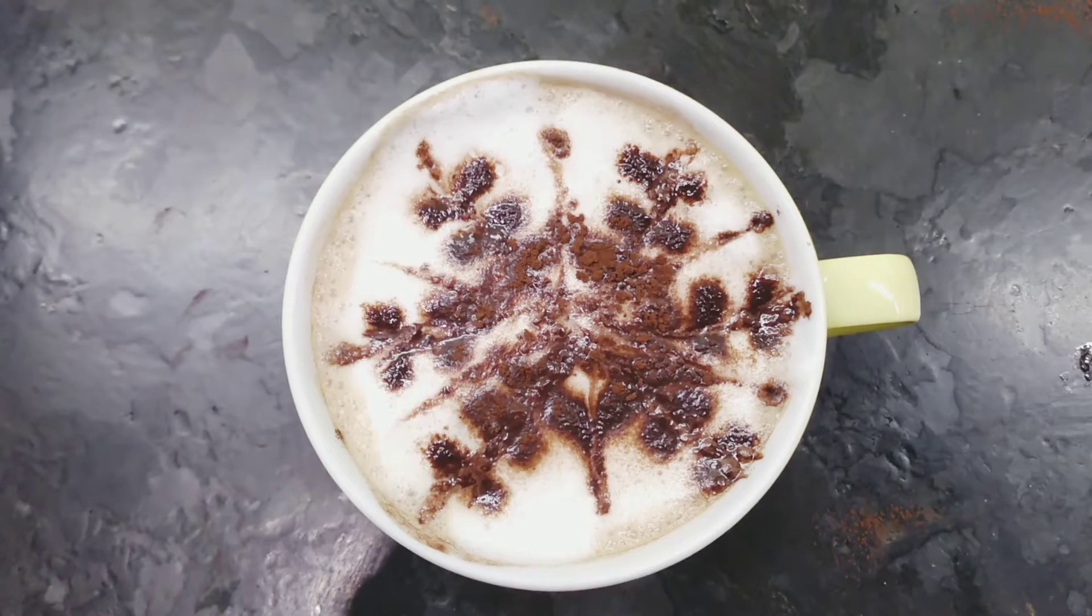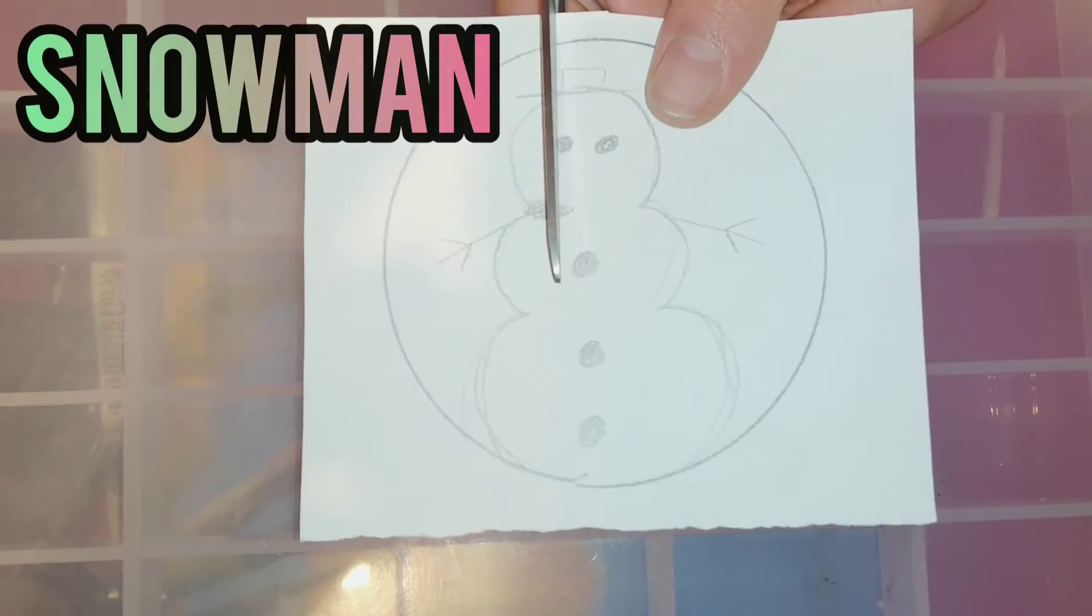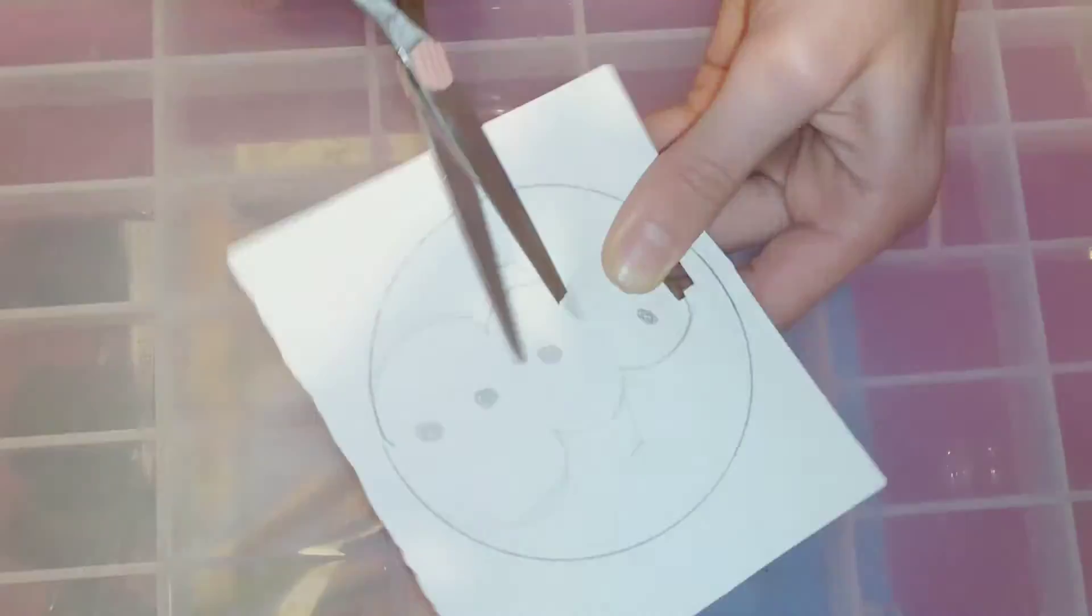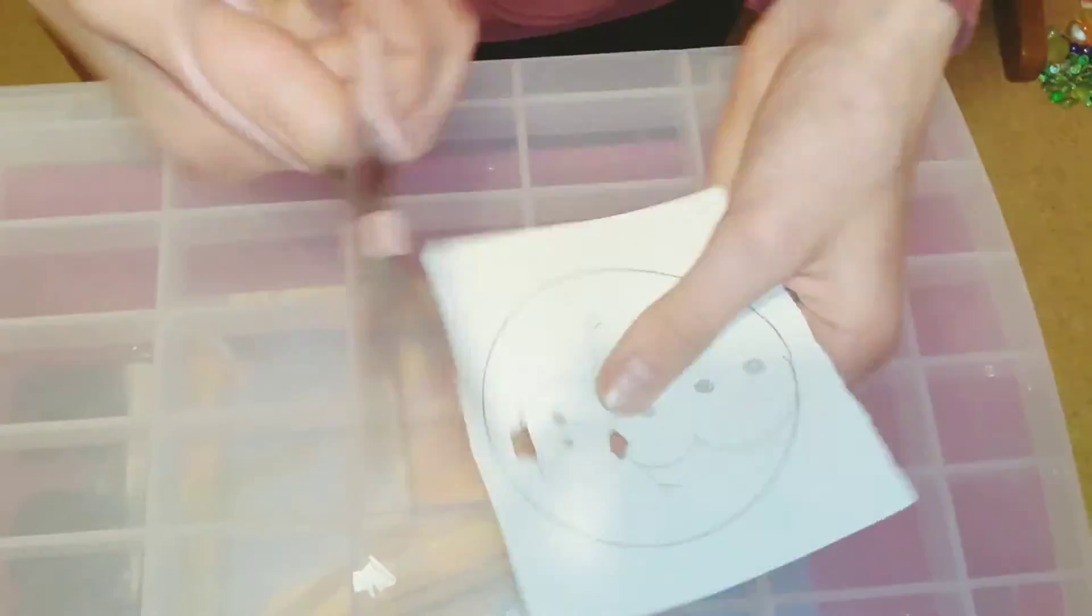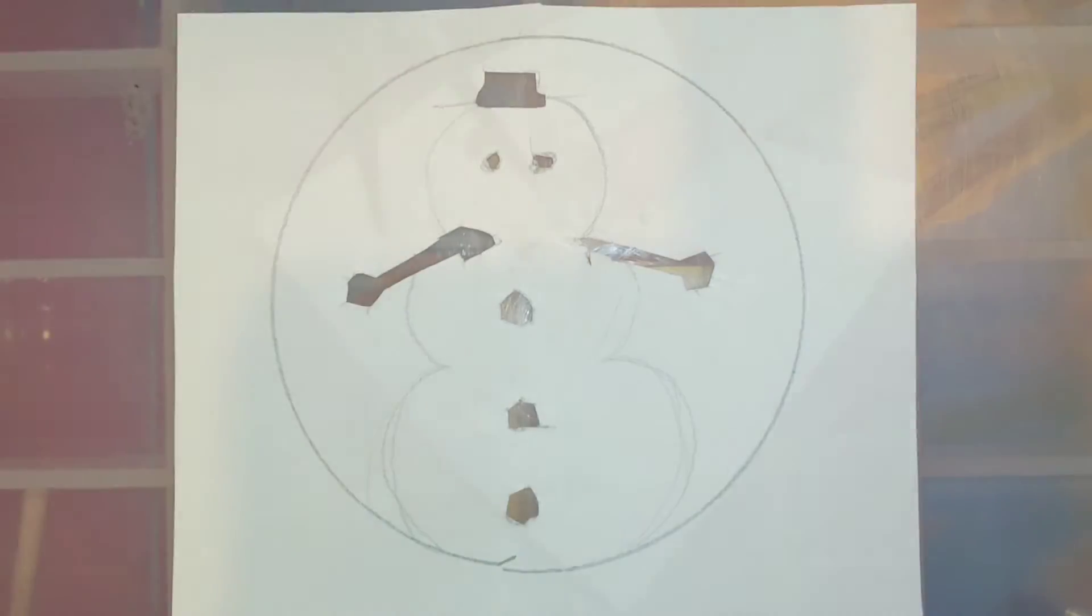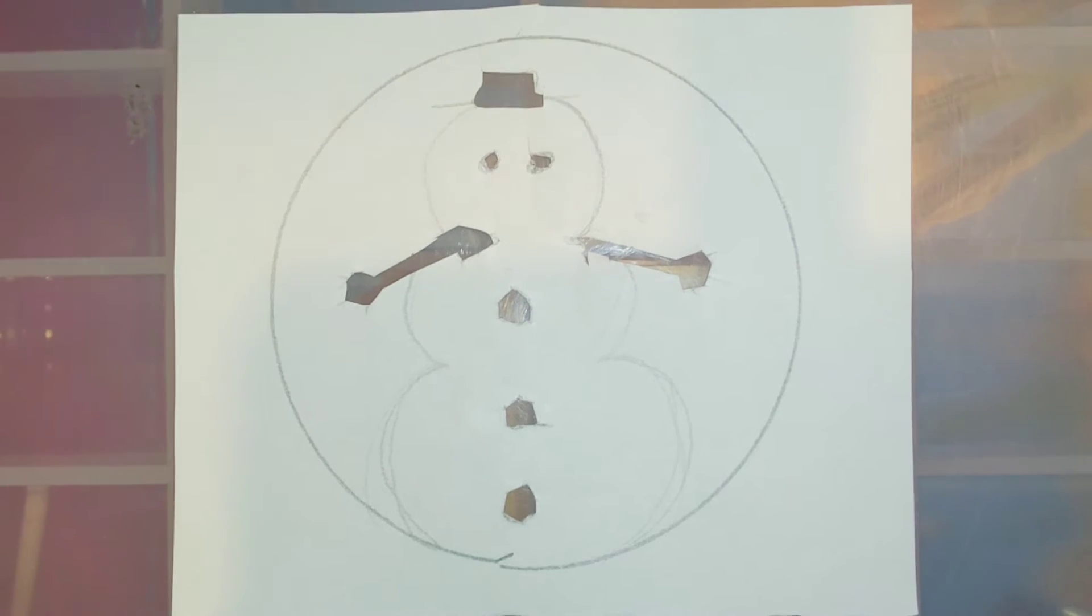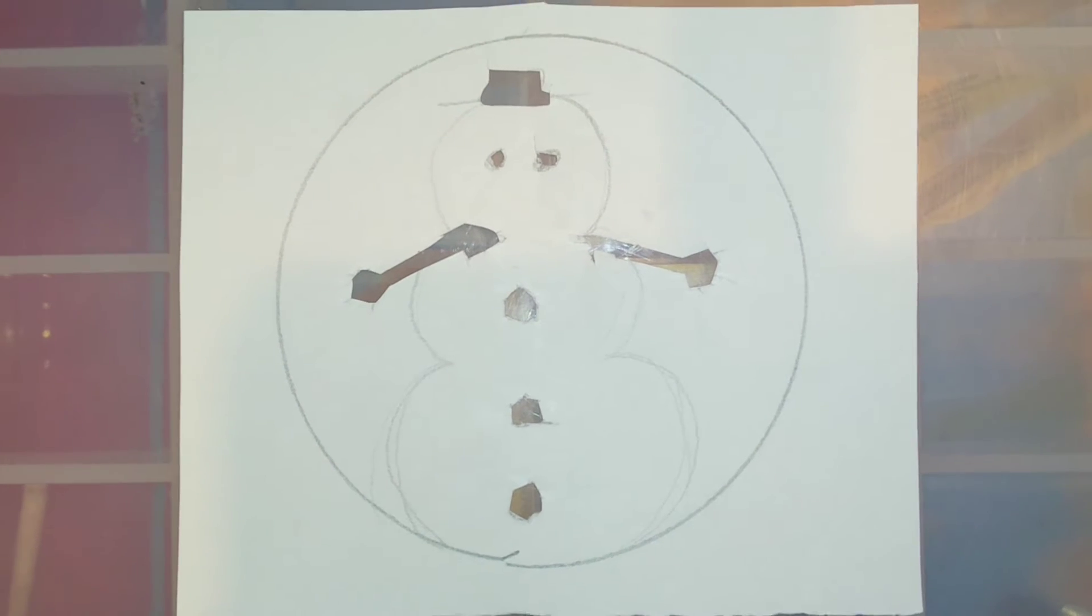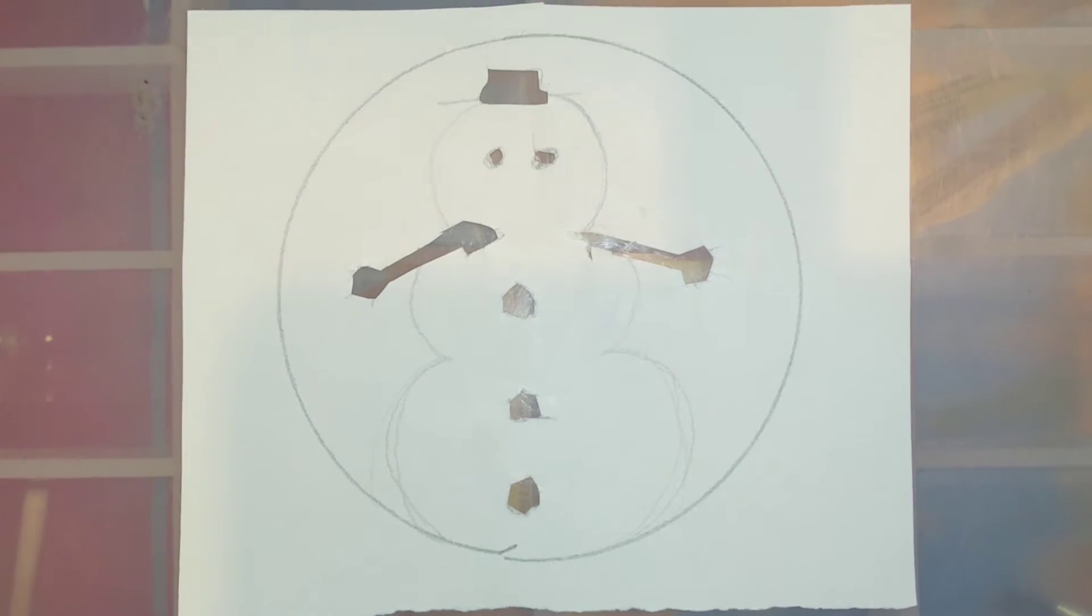You won't want to do it too long before you serve it because it all merges together. The next one is a snowman. You can make this as simple or complicated as you want, for example not doing the arms or the scarf. You'll also need to cut out the buttons and the arms. But you don't need to cut out the rest of the body because that will be frothed milk.